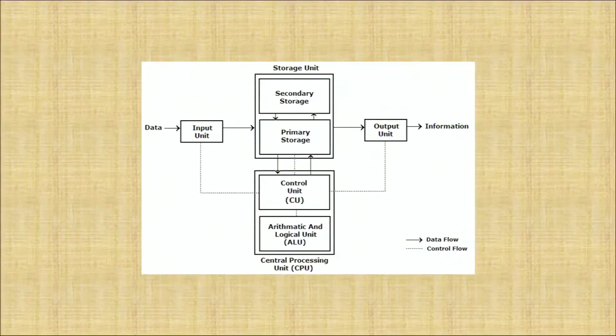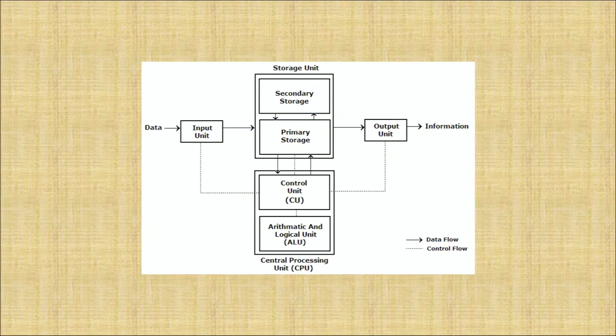The computer system has an input unit where we put the data. The computer processes it through storage and the CPU, and generates output which is called information. Data is raw information — what we collect from here and there that is not yet meaningful. When it is given meaningful form it is called information. Therefore, the computer helps us as accountants to process accounting entries from raw data into meaningful information.